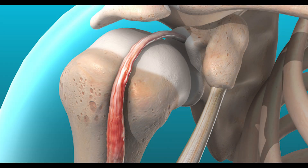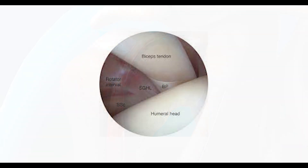Surgery for this issue involves removing the biceps from the shoulder. The biceps muscle has two muscle bellies, so it has two tendons that attach up around the shoulder. One of these tendons attaches within the shoulder, and that's the one that's bothersome for patients. The other tendon attaches outside of the shoulder and never causes issues for patients.